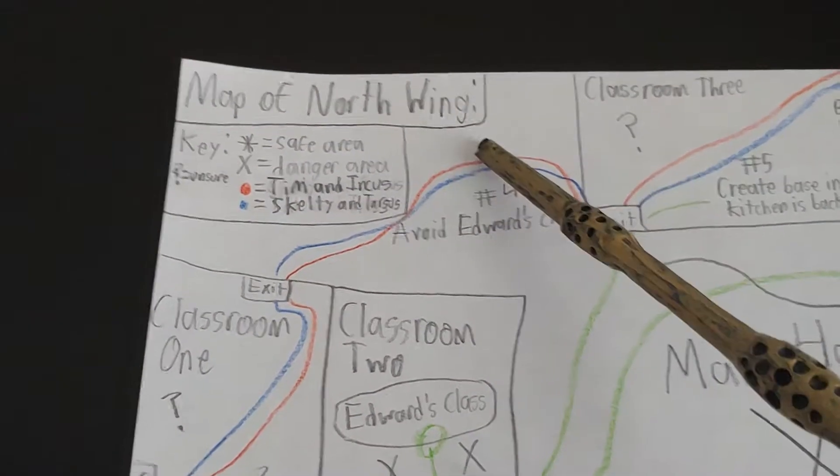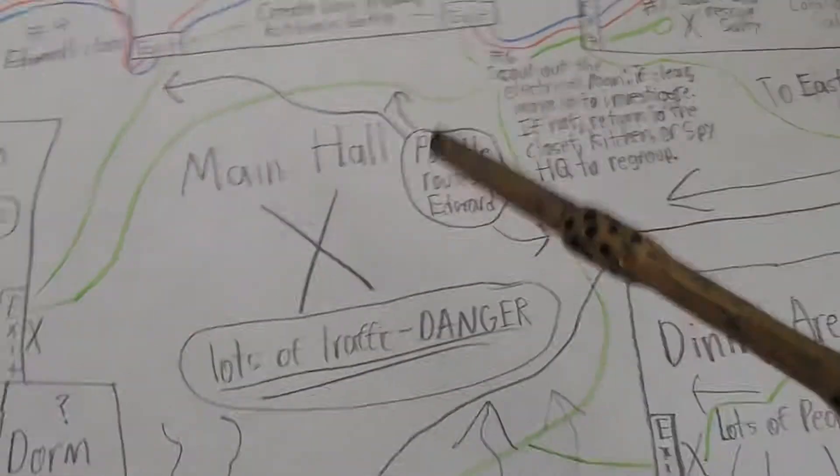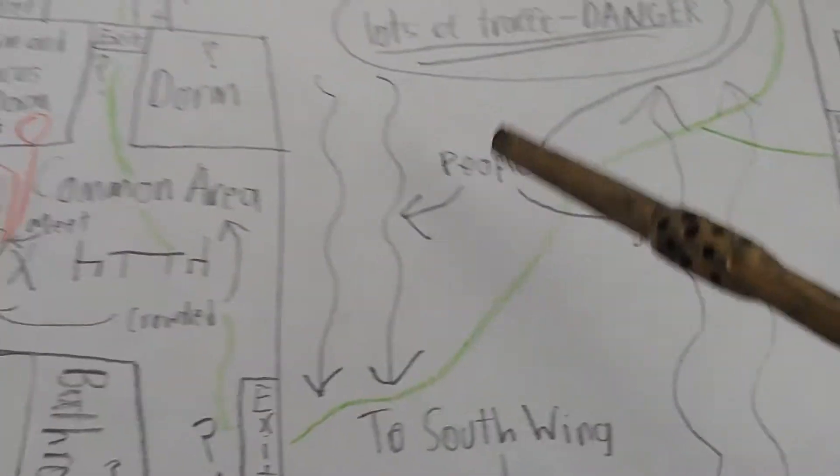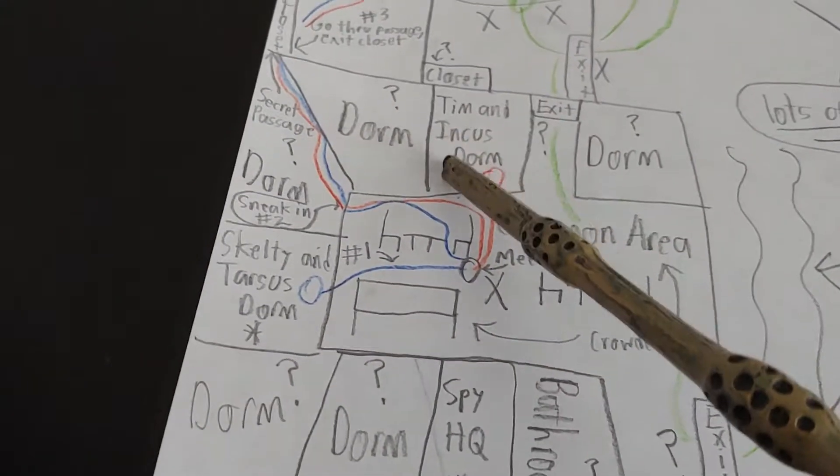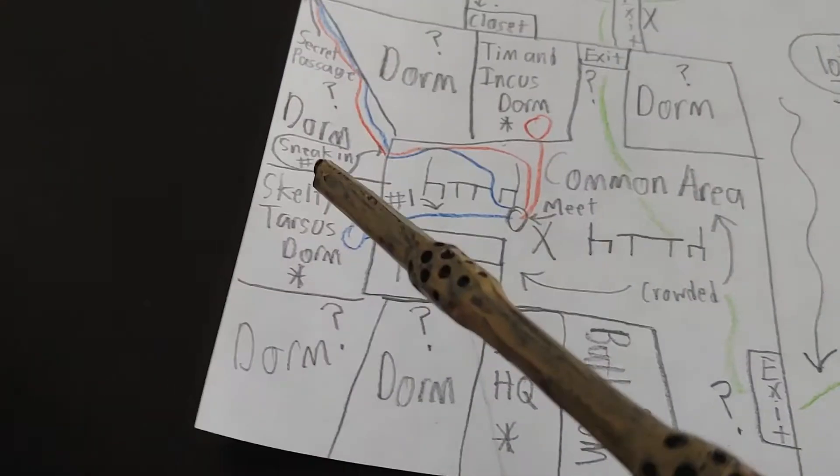I'm gonna go through it. I've got my handy dandy elder wand Harry Potter toy as a pointer because I couldn't find anything else. Let's get into it. First off, this is the common area and the dorms. This is Tim and Incus's dorm, and this is my dorm and Tarsus's dorm.